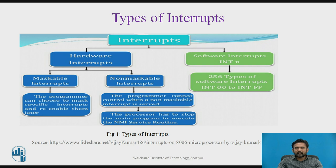Looking at the types of interrupts, interrupts can be divided into two different parts: one is hardware interrupt and another one is software interrupt. For hardware interrupts, we can count a maskable type and a non-maskable type. In the maskable type, programmers can choose to mask specific interrupts and re-enable them later — meaning we can control the interrupts generated during program execution. In non-maskable interrupts, programmers cannot control when a non-maskable interrupt is served, so we could not manage or control the interrupt once it is generated. The processor has to stop the main program to execute such a non-maskable interrupt.